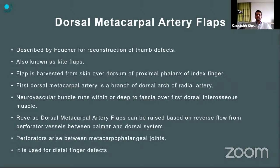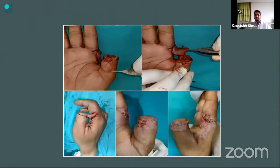Dorsal metacarpal artery flaps, also known as kite flaps, were described by Foucher for reconstruction of the thumb. This flap is harvested from the skin over the dorsum of the proximal phalanx of the index finger. The first dorsal metacarpal artery is a branch of the dorsal arch of the radial artery; the neurovascular bundle runs within or deep to the deep fascia over the first dorsal interosseous muscle. Reverse dorsal metacarpal artery flaps can be raised based on reverse flow from a perforator between the palmar and dorsal systems. This example shows a reverse dorsal metacarpal artery flap used when the tip of the thumb was lost and patient did not want shortening — a flap was harvested from the dorsal index finger and inset over the tip of the thumb with a very good result.